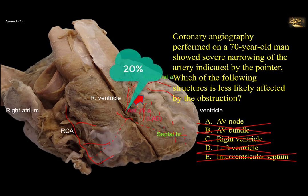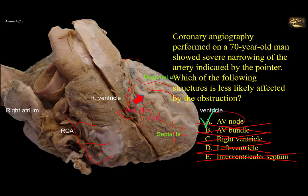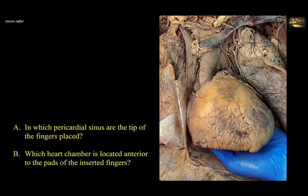But in 20% of cases, it is the circumflex artery that supplies the AV nodal branch, and this is when the circumflex artery supplies the posterior interventricular artery, in case of left coronary dominance. Therefore, the AV nodal artery either arises from the right coronary artery or from the circumflex branch, and there is no way that it arises from the anterior interventricular artery. Therefore, the AV node is least likely affected by obstruction of the anterior interventricular artery.